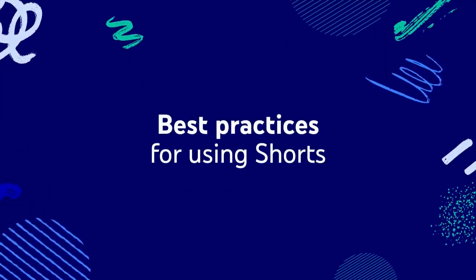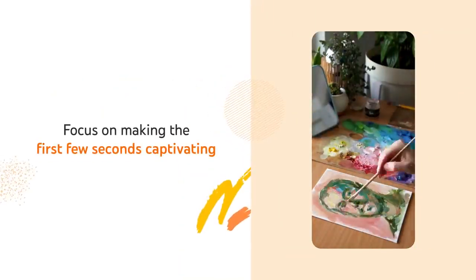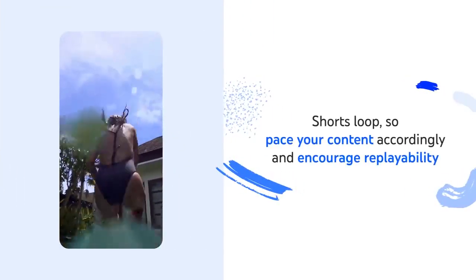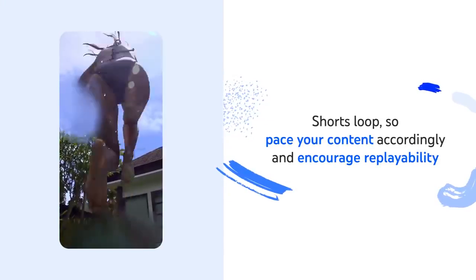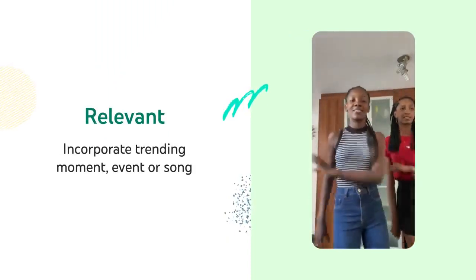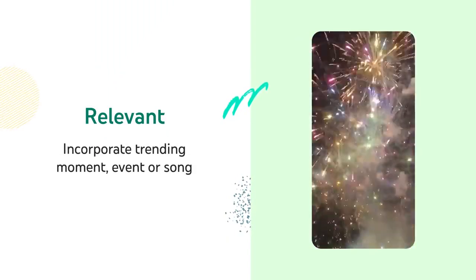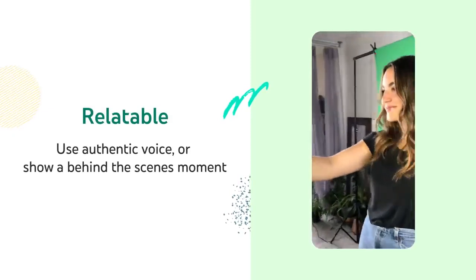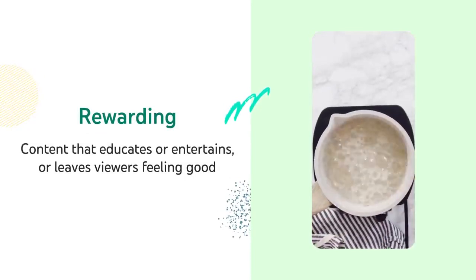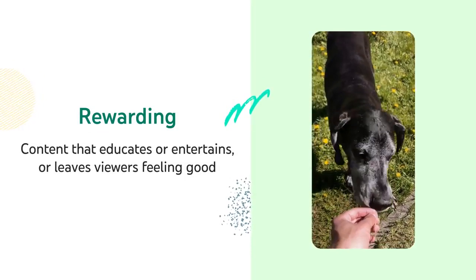Finally, let's walk through some best practices for using shorts. Any content category can be successful on shorts, but here are some short form best practices that can help. Focus on making the first few seconds captivating to grab viewers' attention, and keep your content snappy. Remember that shorts loop, so pace your content accordingly, and think of ways you can encourage replayability. Try making your content relevant by incorporating a trending moment, event, or song. Relatable by using your authentic voice or showing a behind-the-scenes moment. Or rewarding by making content that educates or entertains, or leaves your viewers feeling good.